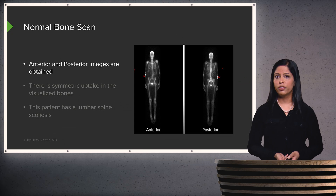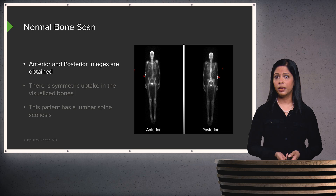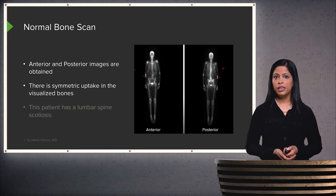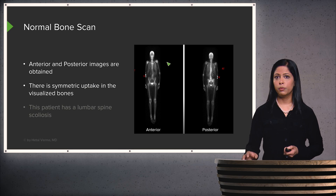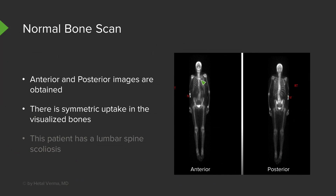This is an example of a normal bone scan. Usually we have anterior and posterior images obtained to take a better look at all of the structures. You can see symmetric uptake in the visualized bony structures — the shoulders have symmetric bilateral uptake, there's normal uptake within the spine, symmetric uptake within both lower and upper extremities. Somewhat prominent uptake within the skull is also expected and normal. The focus down here is the urinary bladder due to excretion of radiotracer.